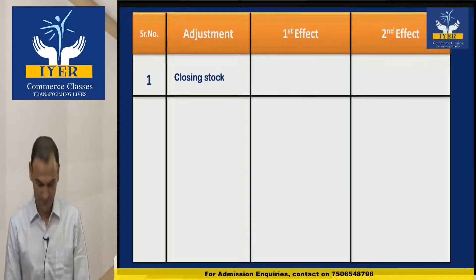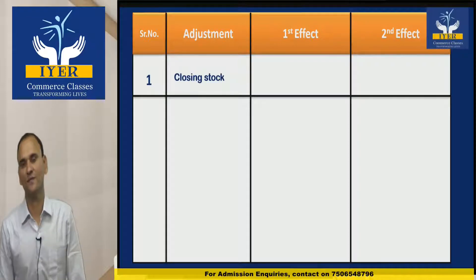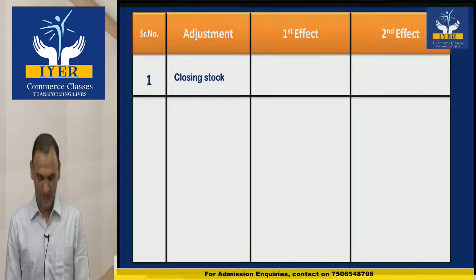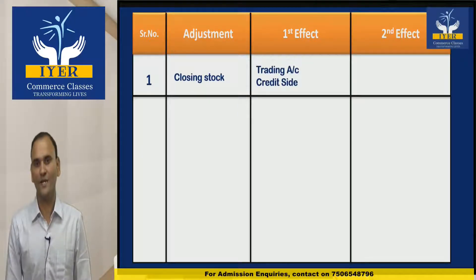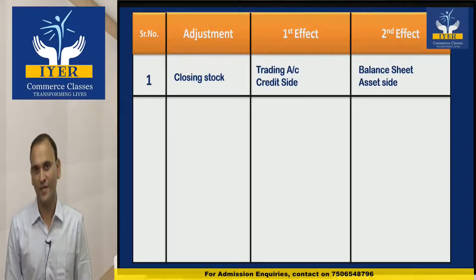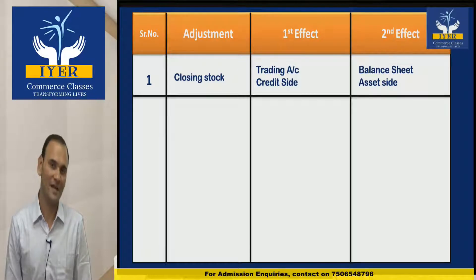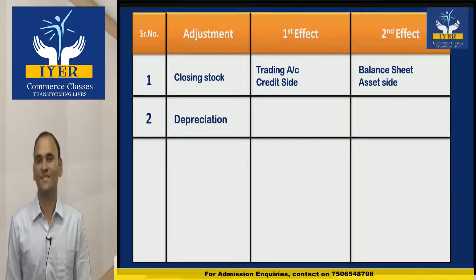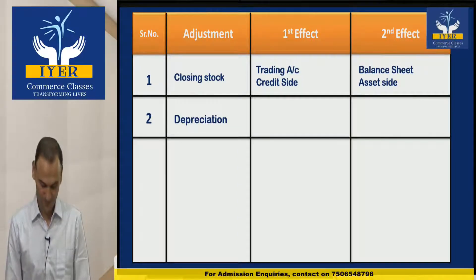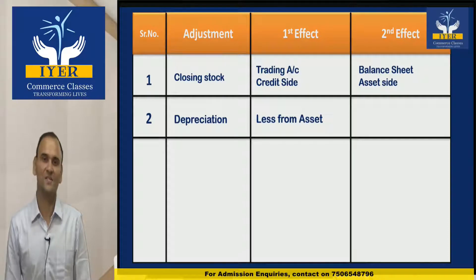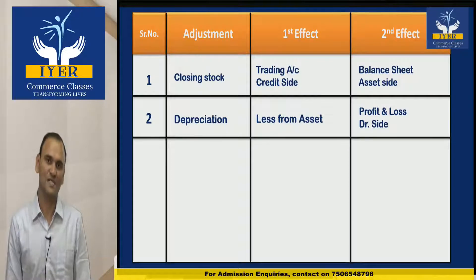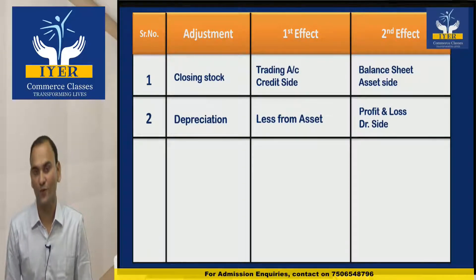Adjustments have two effects. The first adjustment is Closing Stock, and the two effects are: Trading Account credit side, and Balance Sheet asset side. Adjustment number two is Depreciation, and the two effects are: less from asset, and Profit and Loss debit side.